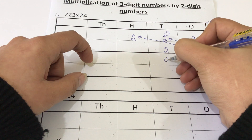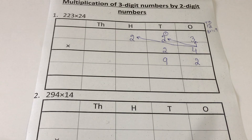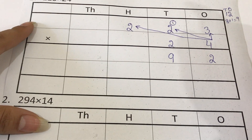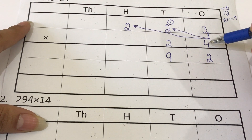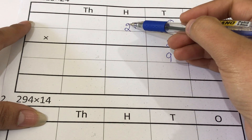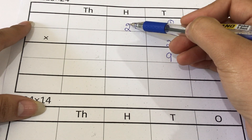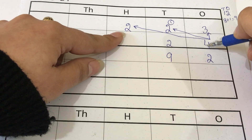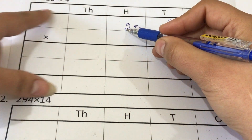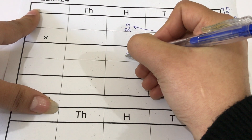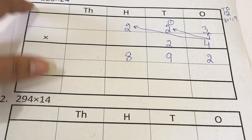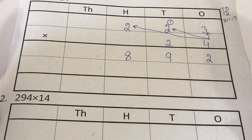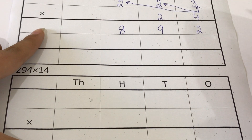Next we have to multiply this four with the digit in the hundreds place. The digit in the hundreds place is two, so four twos are eight. As it's a single digit number we can write it directly. We have done with the multiplication of ones.